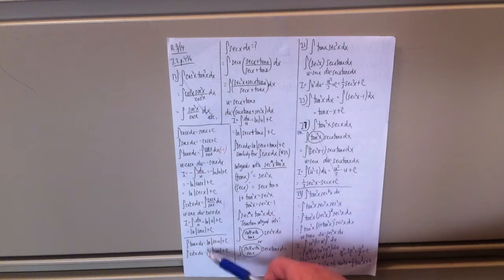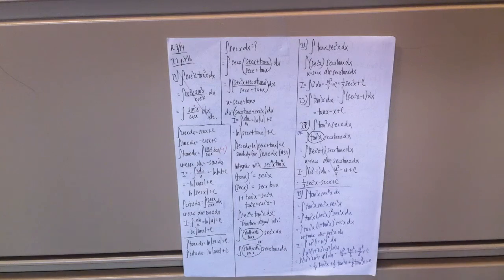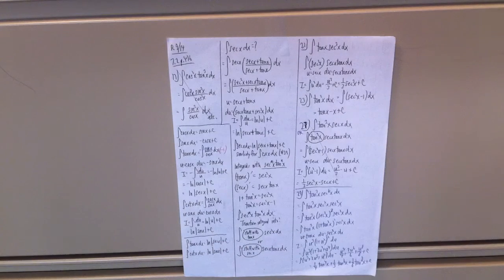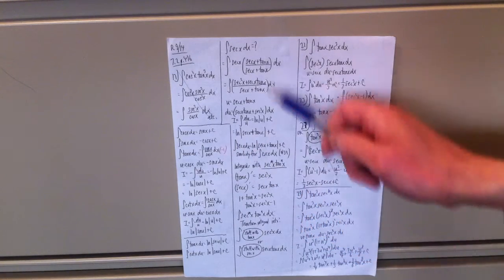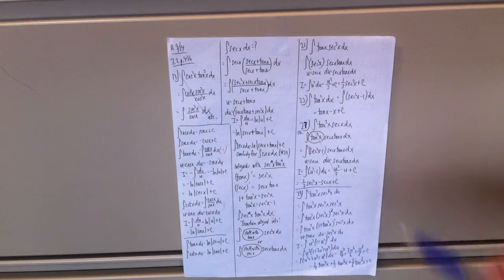So again, integral of tangent is ln|sec x| + C. Integral of cotangent x is ln|sin x| + C. The integral of secant is ln|sec x + tan x| + C. There is a derivation for that. There is also an integral for the cosecant, but I'm going to hold off on that.